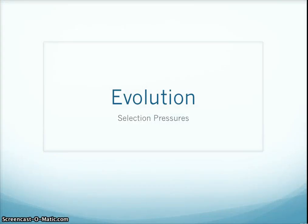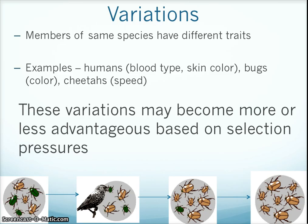This video reviews selection pressures. Variations among different members of a species are very important to evolution. Variations are differences among members of a species. Examples include blood type, skin color, body color in bugs, and speed in cheetahs. These variations may become more or less advantageous based on selection pressures.